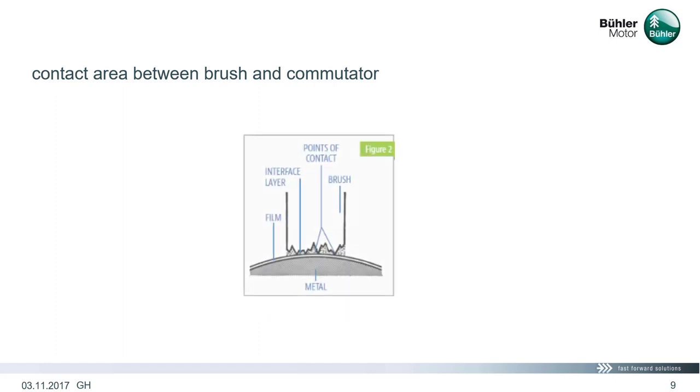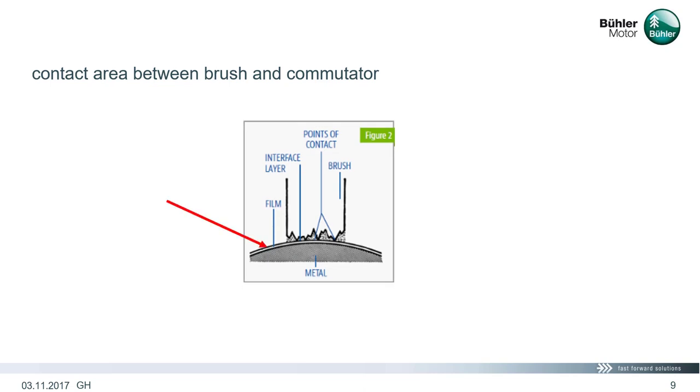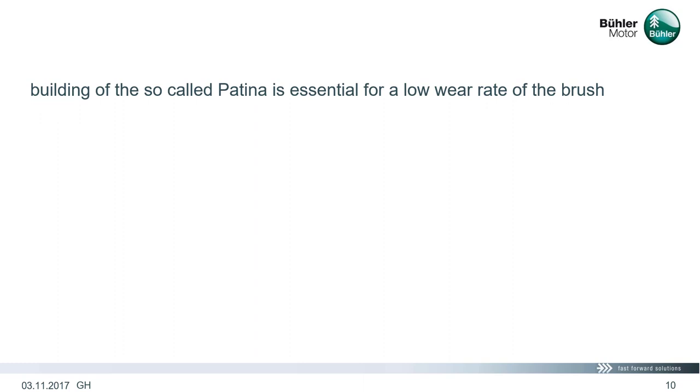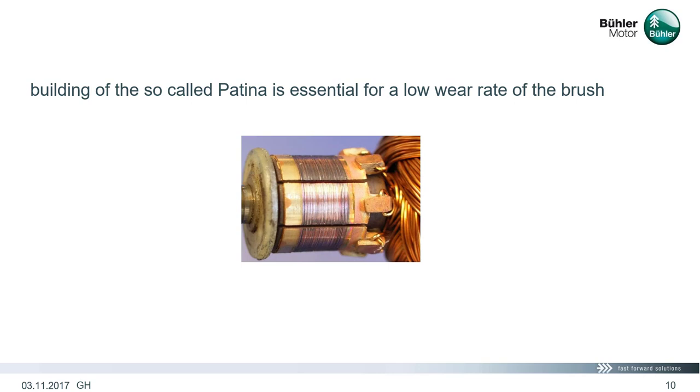All this is exposed to the environmental conditions in the commutation area. If we look at the contact area between the brush and the commutator a little closer, we need to focus on the film that builds up during the motor application. This film is called patina and is basically responsible for the brush life of the motor. The building of the patina is a very complex electrochemical process with various process parameters that influence the result. Nevertheless, it is essential for a low wear rate of the brush. Here is an example for a good patina. Again, the building of such a good patina is depending on various impacts, which will be discussed next.